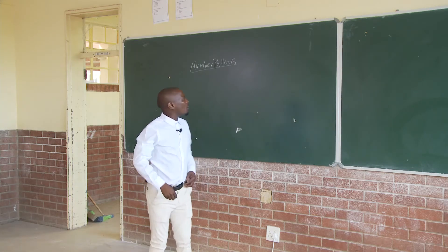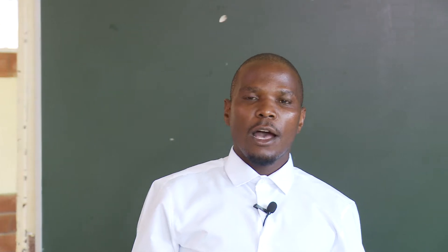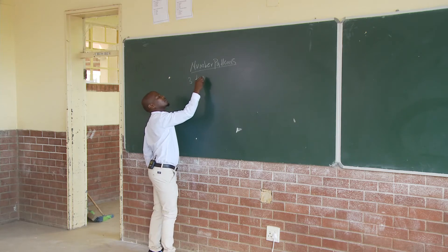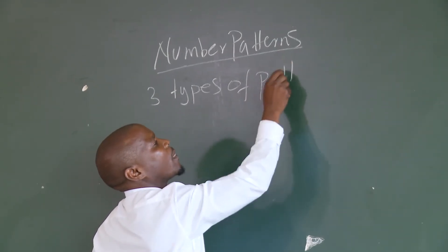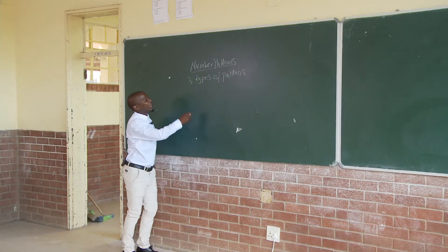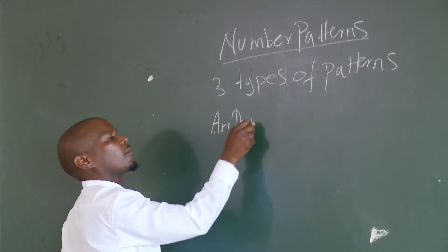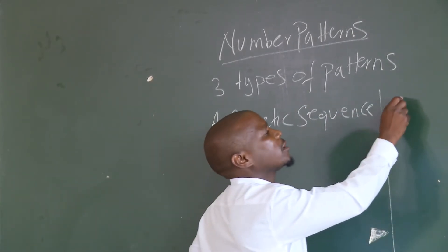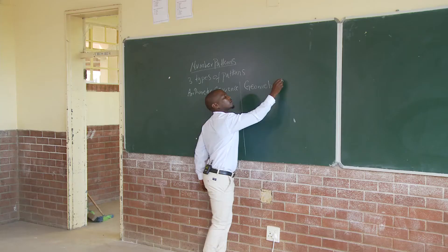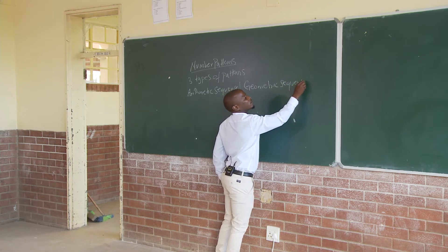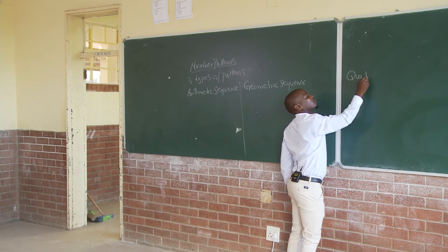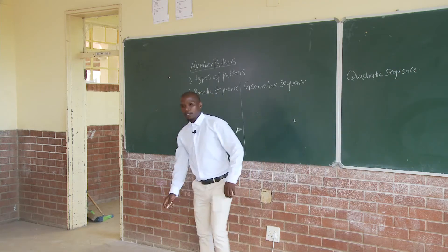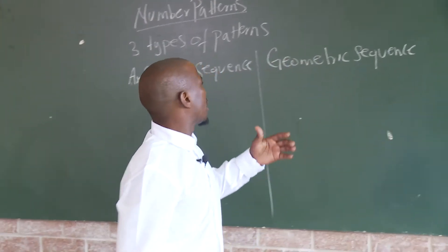Remember, if you have number patterns, you will understand how the patterns are. There are three types of patterns. The first is the arithmetic sequence. The second is a geometric sequence. The third is a quadratic sequence. As you can see, this is an arithmetic sequence.